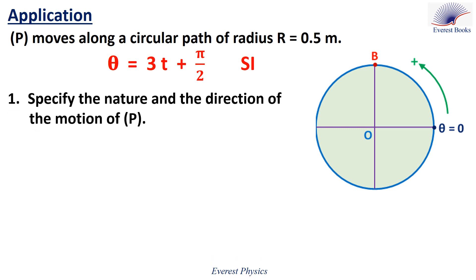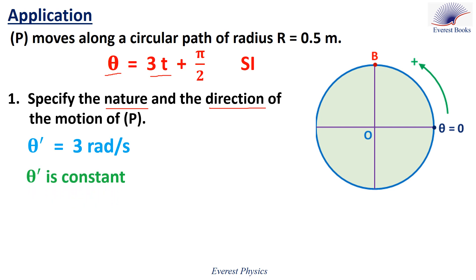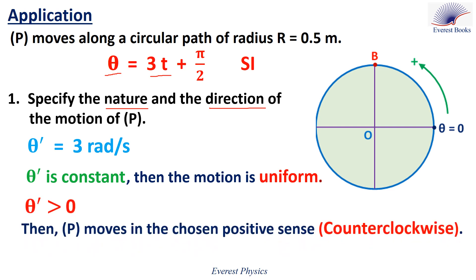Number 1: Specify the nature and the direction of the motion of P. To specify the nature of the motion, we have to calculate the value of theta prime. And to specify the direction, we have to determine the sign of theta prime. Theta prime is the first derivative of theta. Since theta equals 3T plus π over 2, the time derivative of 3T equals 3, and the derivative of π over 2 equals 0. So theta prime equals 3, which is constant. Therefore, the nature of the motion is uniform. Theta prime is positive, so P moves in the chosen positive sense, which is counterclockwise as shown on the figure.